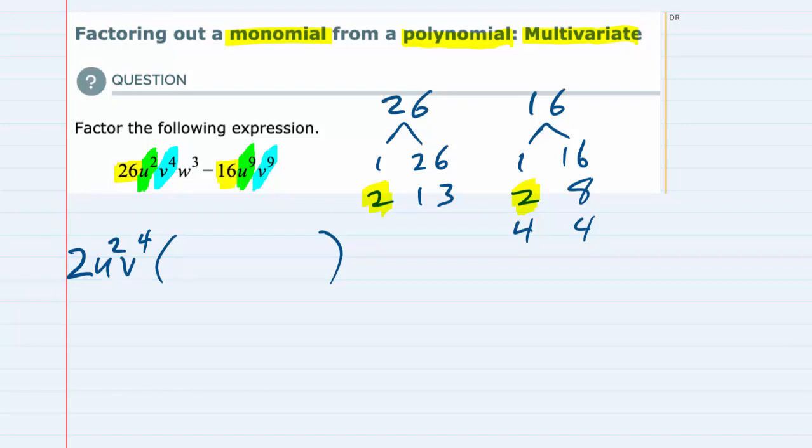Now that we've identified the monomial that we're going to be factoring out, we just need to find out what's left from each one of the terms that we're factoring out of. So if it's helpful, over on the side we can write the first term and we can divide it by that common factor that we're taking out, the 2u²v⁴.